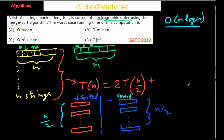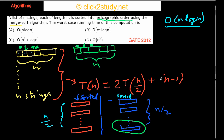When merging, you compare the front elements of each sorted half and place the larger one into the result array, repeating this process. In the worst case you perform n−1 string comparisons during the merge. For each such comparison, since each string has length n, you may need up to n character comparisons. So the merge step costs O(n²) in the worst case, giving the recurrence relation.